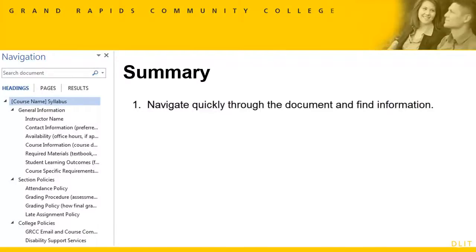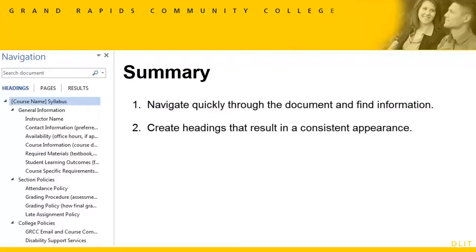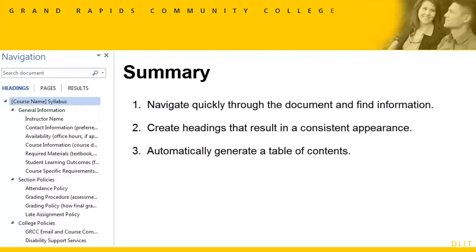To summarize: all users can easily navigate and skim through a document with proper heading structure. We can easily see the structure in the Navigation Pane. The appearance is consistent — for example, all Heading 2 styles look the same, all Heading 3 styles look the same. It is easy to maintain and revise the styles used for the heading structure, which I'll show in the Part 2 video. You can create an automated table of contents by clicking the References tab and then the Table of Contents button — Word will do all the work for you when proper heading structure is set up. Word also has other automated and convenient features when heading structure is used properly.